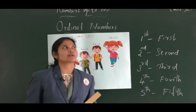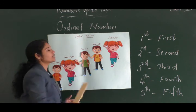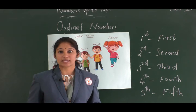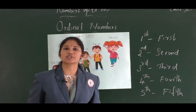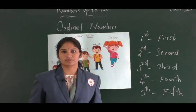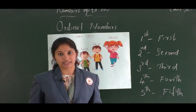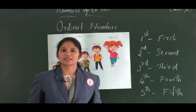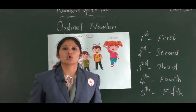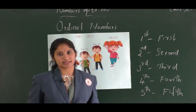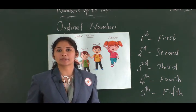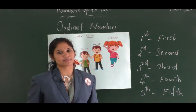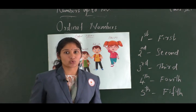Our next topic is ordinal numbers. Ordinal numbers come from the word 'order' — they tell about the position or place of an object. You are all familiar with a running race, right? The child who finishes the line earliest gets first position, and the child who reaches the finishing line next gets second prize, and so on.